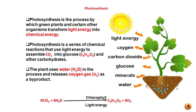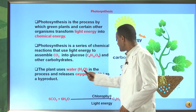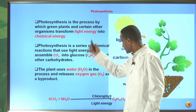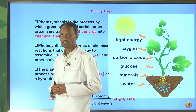Therefore, photosynthesis is the process by which green plants and certain other organisms transfer light energy into chemical energy. In addition, photosynthesis is a series of chemical reactions that uses light energy to assemble carbon dioxide into glucose and other carbohydrates. The plant uses water and releases oxygen to the atmosphere during the process of photosynthesis.